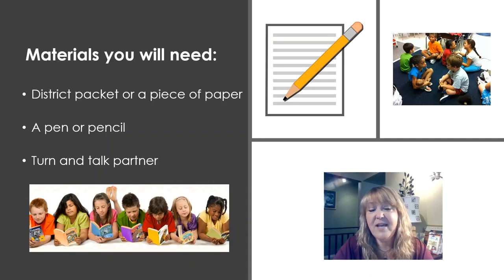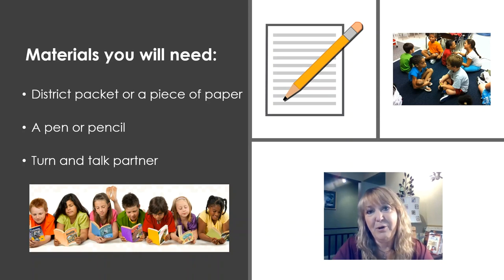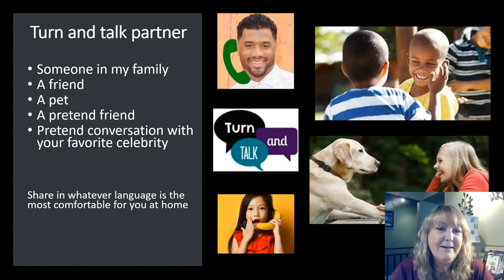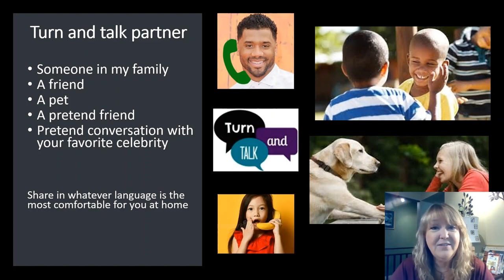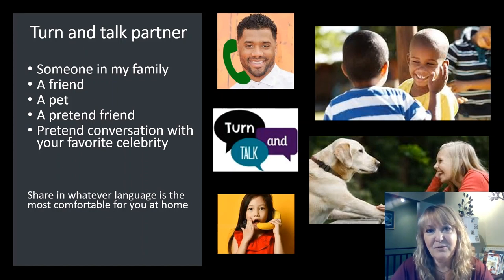Before we get going on our lesson, let's take a second to figure out the materials that you'll need. If you have a district packet, that's great. But if not, just a regular piece of paper and something to write with — a pen or pencil — will work great. And of course, you're going to need a turn and talk partner. Remember that your turn and talk partner can be someone you have at home, maybe somebody in your family. It could be a friend, maybe on the phone. You can talk to your pet, a pretend friend — you can even have a pretend conversation with one of your favorite celebrities. Just make sure that as you're sharing your thoughts and ideas today, you share in whatever language is most comfortable for you at home.